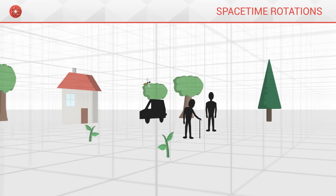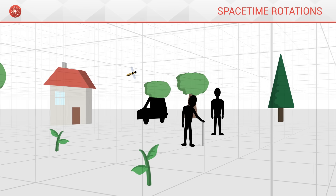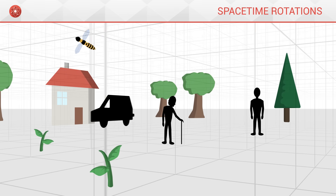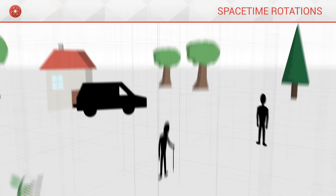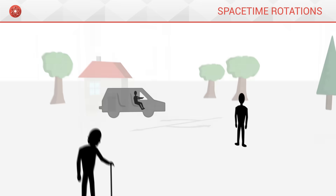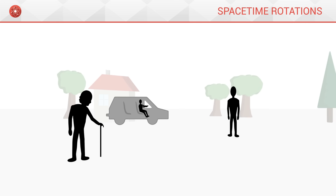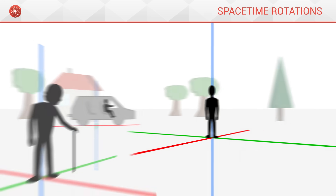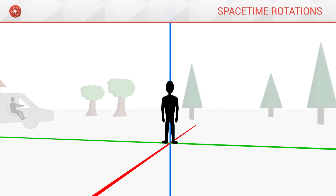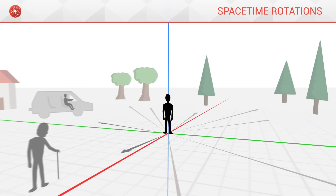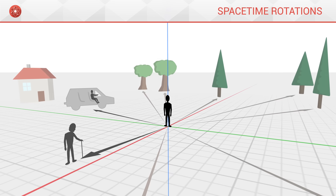We live in a geometric space in which we can move, turn, measure lengths or angles. Each person has their own frame of reference, a unique point of view of the universe, of which we are the centre, and through which we locate objects around us.